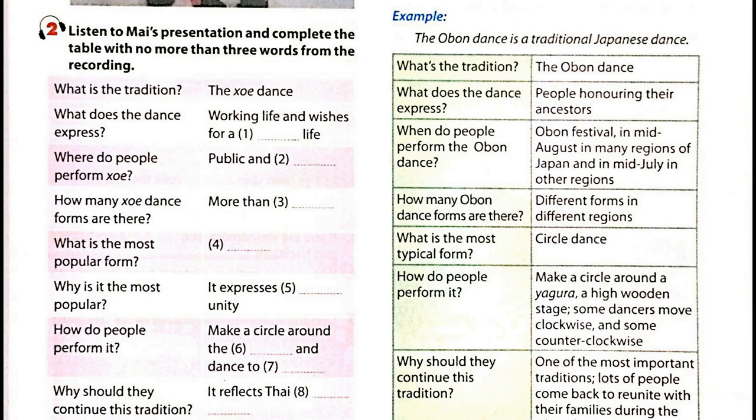Thai people have followed this spiritual tradition for generations. The Xoe dance expresses people's work in life and wishes for a happy and wealthy life. It is performed in both public and private gatherings such as celebrations, festivals or family reunions. The Xoe dance has more than 30 forms based on the first six ancient forms. The most popular form is the Xoe Vum, or circle dance, because it expresses social unity.